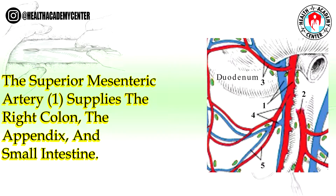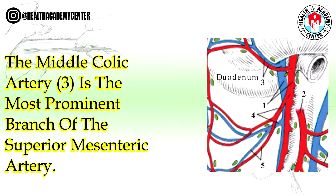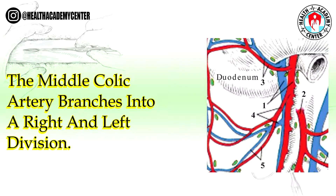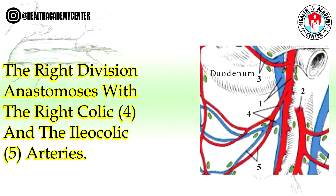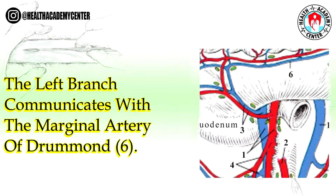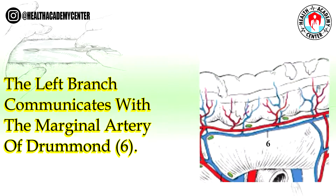The superior mesenteric artery (1) supplies the right colon, the appendix, and the small intestine. The middle colic artery (3) is the most prominent branch of the superior mesenteric artery, and it branches into a right and left division. The right division anastomoses with the right colic (4) and the iliocolic (5) arteries, while the left branch communicates with the marginal artery of Drummond (6).